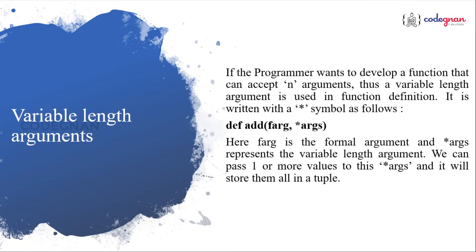We have understood default arguments — the word default itself says we pass some value as default. Now I will tell you one more interesting concept about default arguments along with variable arguments. What do we mean by variable length arguments? Sometimes a programmer doesn't know how many values or what types of values we need to pass into a function. So we don't have any clarity of how many values our function should accept, and it should execute the same way.